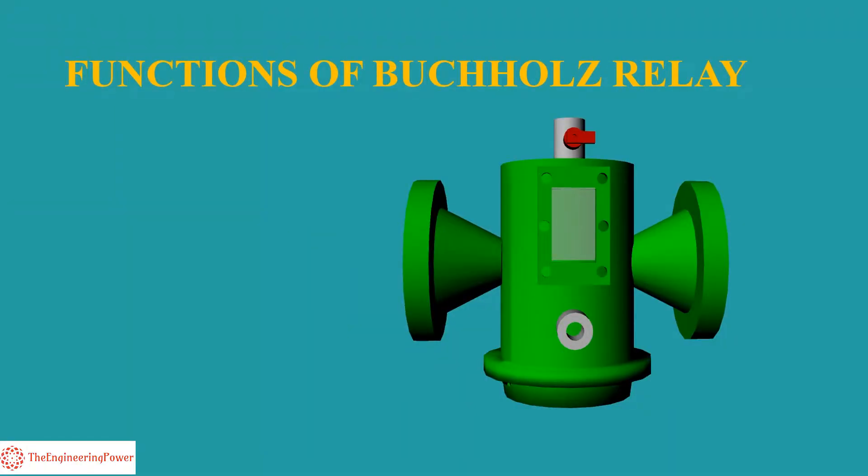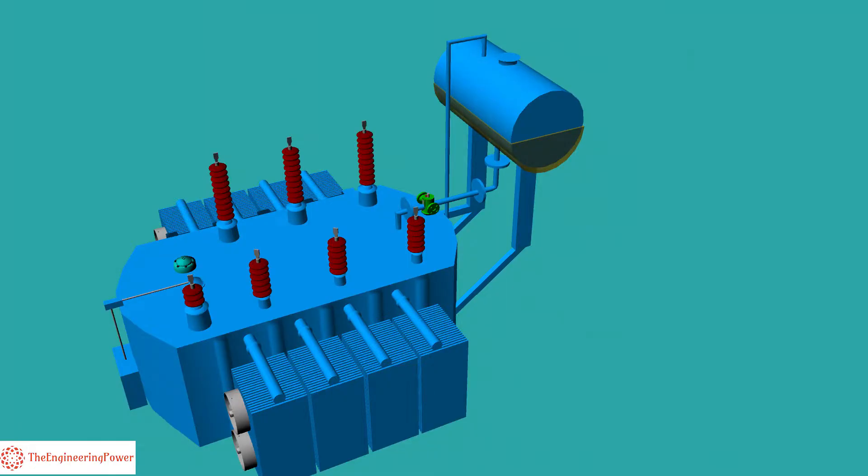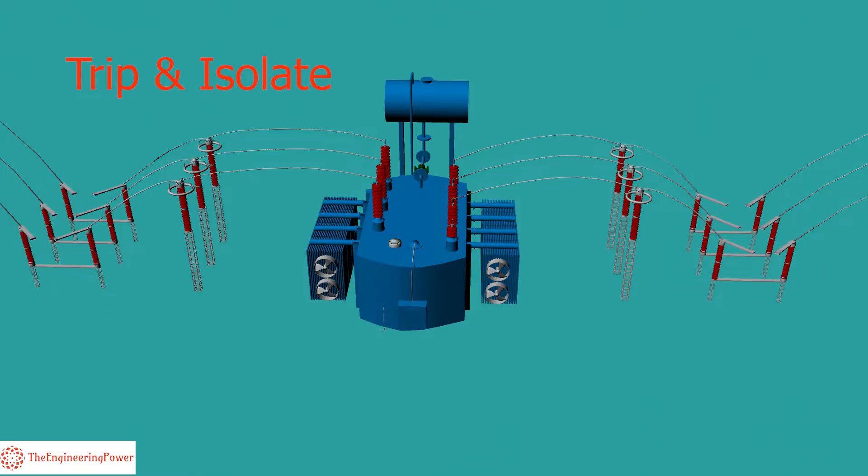Buchholz relay performs two main functions: to give an alarm in case of minor faults inside the transformer, and to trip and isolate the transformer from rest of the system in case of major faults.